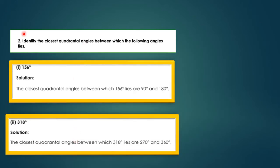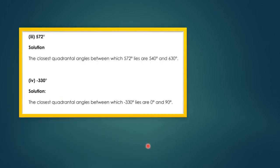Question 2: Identify the closest quadrantal angles between which the following angles lie. First part: 156° lies between 90° and 180°. Second part: 318° lies between 270° and 360°. Third part: 572° lies between 540° and 630°. Fourth part: −330° lies between 0° and −360° (i.e., between 0° and 90° in the negative direction).